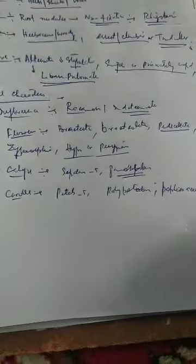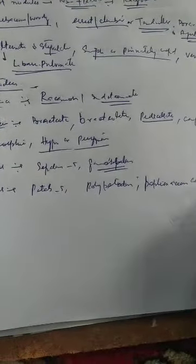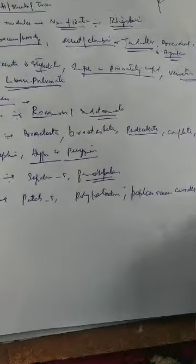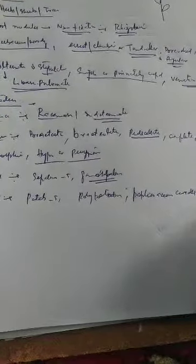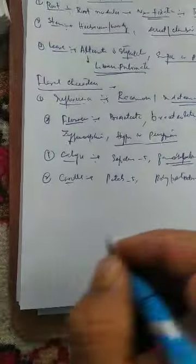The papilionaceous corolla consists of a posterior large petal called the standard or vexillum, two lateral ones called wings, and two anterior ones called keel — giving a 1+2+2 arrangement of petals in the corolla. The innermost two petals are fused to form a boat-shaped structure. This family is thus characterized by the presence of papilionaceous corolla.